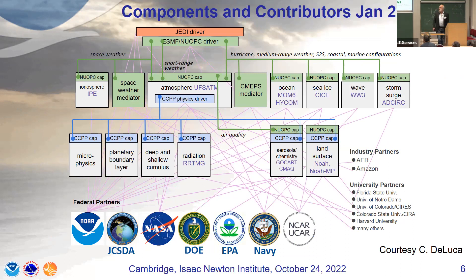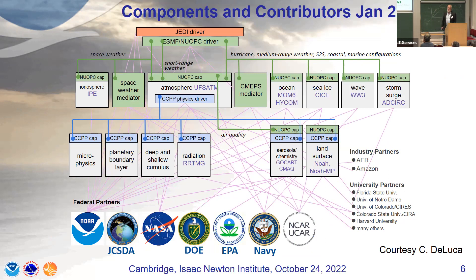We have a couple of model drivers for data assimilation or modeling. All the green pieces show you the unified infrastructure. Then you have component models for the atmospheric dynamical core, atmospheric physics, ocean, sea ice, waves, storm surge, aerosols, land, and we even have an ionosphere model in there. If you think this is just NOAA doing this, there are seven agencies on the bottom working on this together, plus a snapshot of universities and industry partners all working with us.